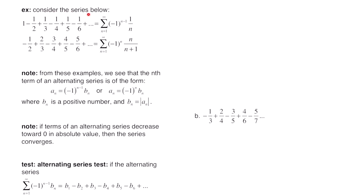We're going to consider the series: 1, then negative 1 half, then positive 1 third, negative 1 fourth, positive 1 fifth, and so on. For this series the first term is positive, the next one is negative, and then positive. To indicate that algebraically we have negative 1 to the n minus 1. When you plug in 1 for n, you get 1 minus 1 or 0, and negative 1 to the 0 is 1, making the first term positive. When you plug in 2, 2 minus 1 is 1, so negative 1 to the 1 makes it negative, which matches the second term.